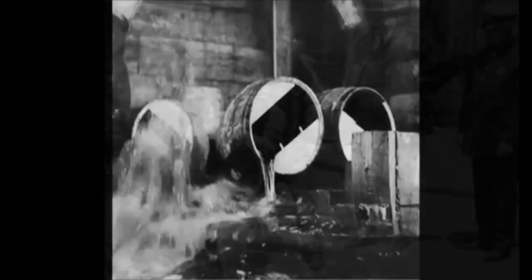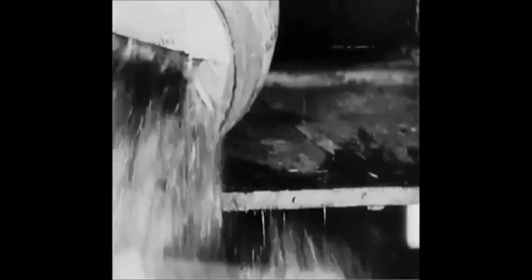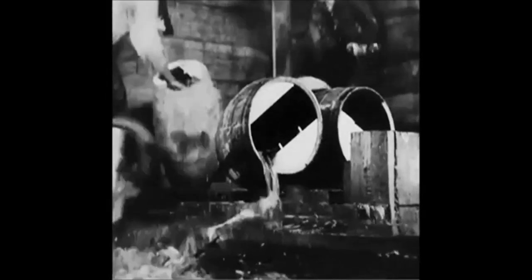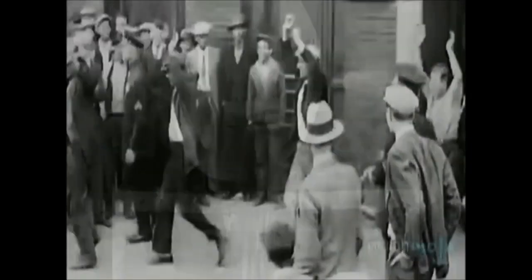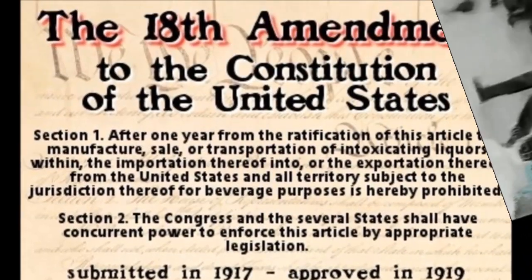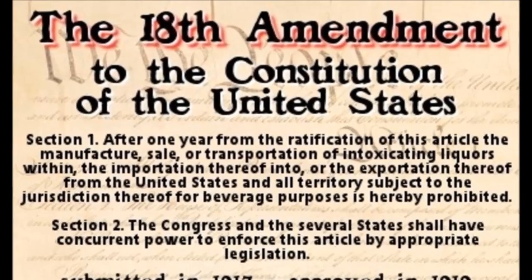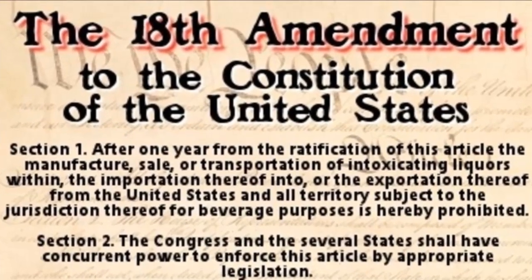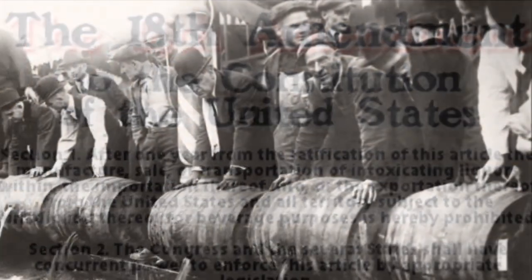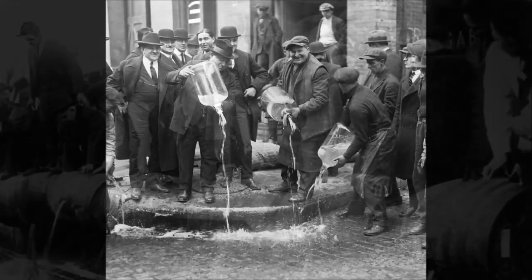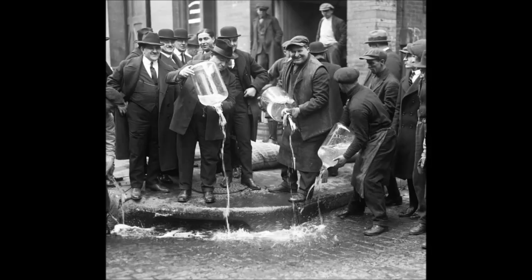In 1917, Congress approved a resolution for a prohibition amendment. It was ratified in 1919 but was later repealed.